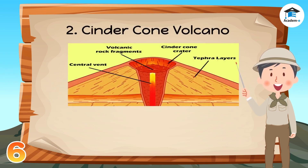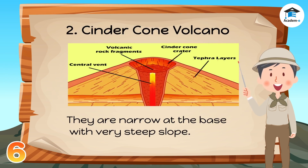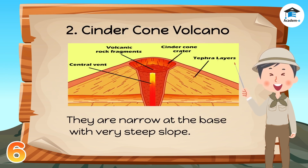Cinder cone is a common type of volcano usually formed from explosive eruptions. They are symmetrical small volcanoes with a narrow base and very steep slope.